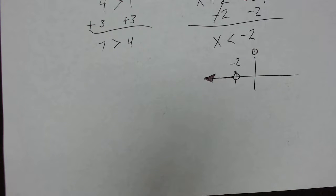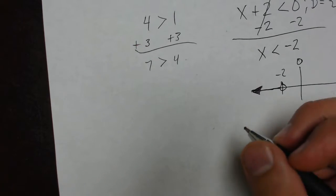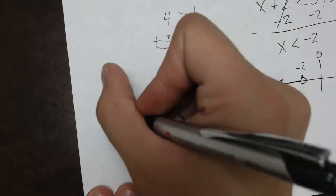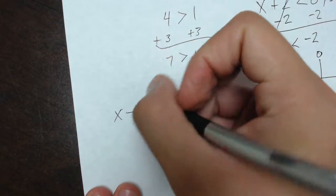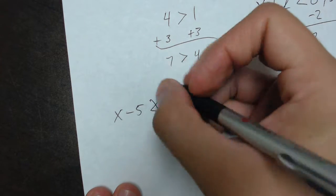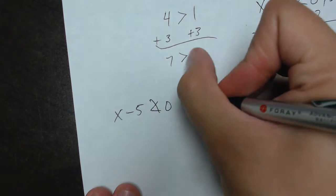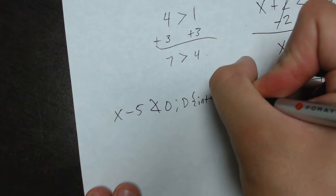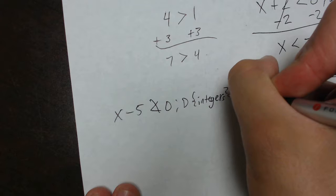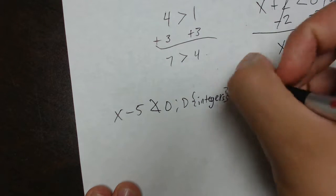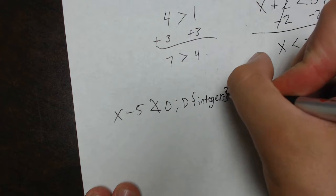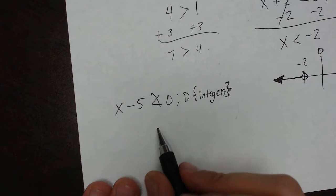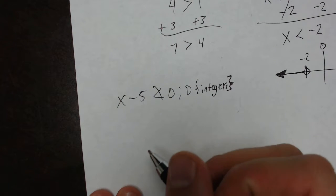And then, the same thing goes for inequalities. Let's say I had, let's do this one. x minus 5 is not less than 0. Domain is going to be integers. So, now we're combining a couple of things here. We're combining domain along with the additive rule. So, and then it's also an inequality. So, first thing, I need to rewrite this inequality as an equality, or this negated inequality as just a normal inequality.